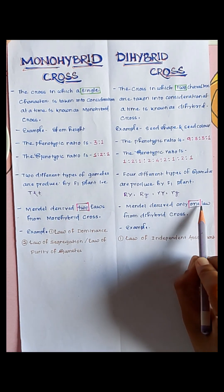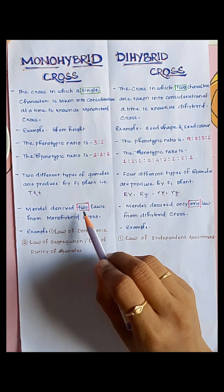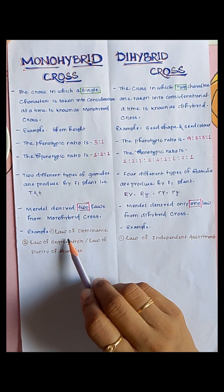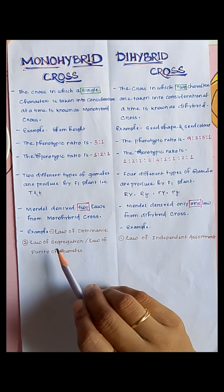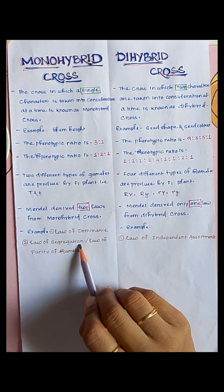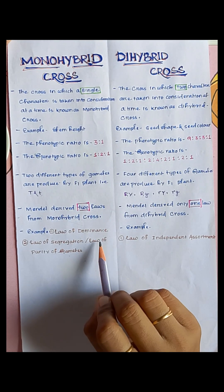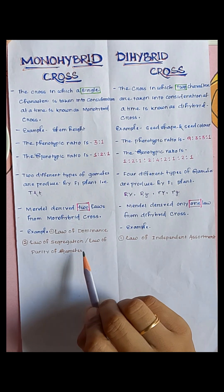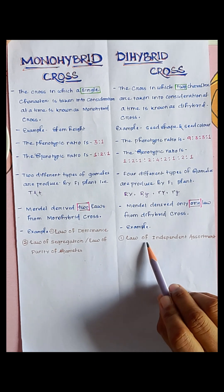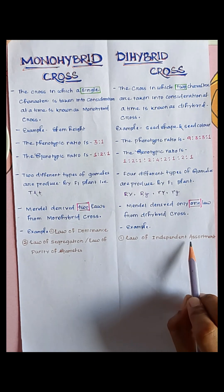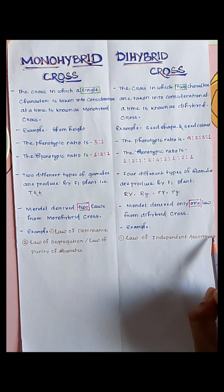Mendel derived two laws from the monohybrid cross: the law of dominance and the law of segregation, also called the law of purity of gametes. Another law, the law of independent assortment, is derived from the dihybrid cross.